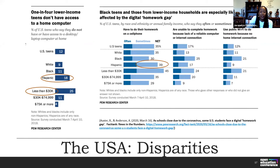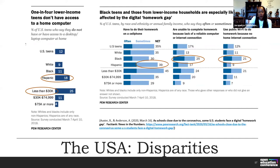Pre-COVID data showed 39 percent of Hispanics in one study were using their cell phone to do homework. Twenty-five percent of Black students indicated they sometimes or often couldn't complete homework due to lack of a reliable computer or internet connection. Some used public Wi-Fi. Then COVID hit — libraries shut down, and we actually saw teenagers standing in front of restaurants during the pandemic trying to do homework. That's how serious the disparities are.